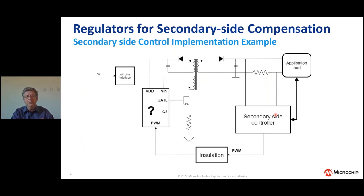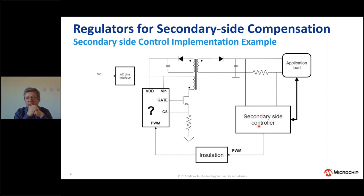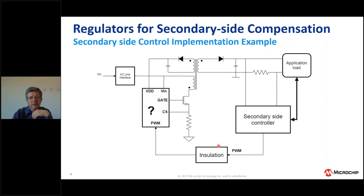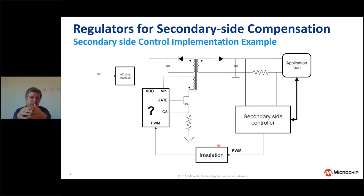Here is a block diagram showing how to control a flyback controller from the secondary side. We have a PWM controller on the secondary side that measures the output voltage or output current depending on the application, and generates a PWM that will be used to directly drive the flyback. Because we need insulation, the PWM needs to be insulated and transferred to the primary side, where some kind of MOSFET driver will take care of driving the flyback. Typically, in this kind of application, we don't just have an analog circuit but something more intelligent — typically a microcontroller.